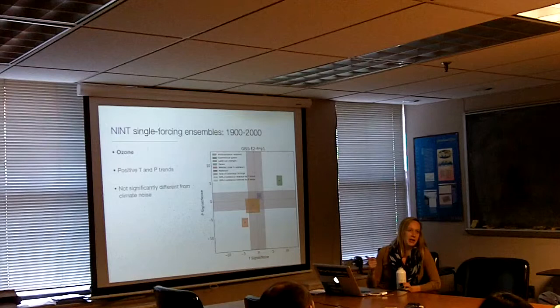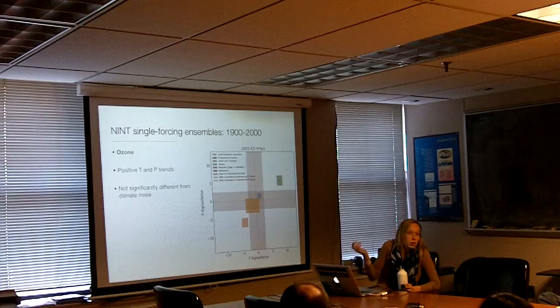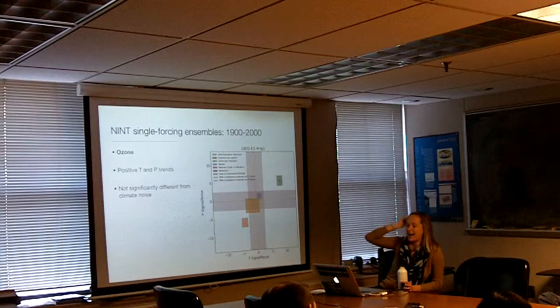The reason I'm only using GIST models is A, I work here, and B, only two modeling groups submitted the full suite of experiments you need to do these hypothesis tests to the CMIP archive. I have similar results for CCSM4 — the CCSM4 results are almost identical to the NIT results in GIST, which is encouraging.